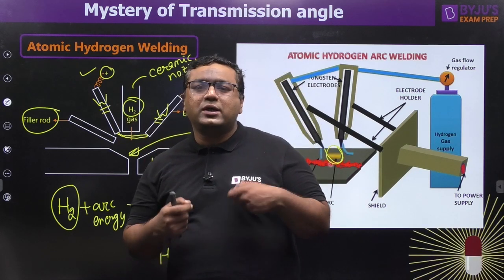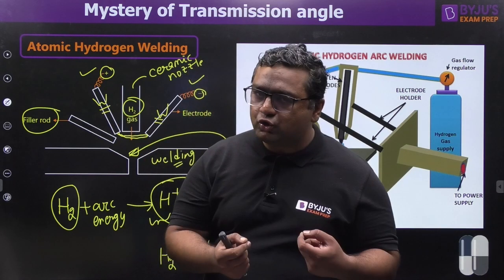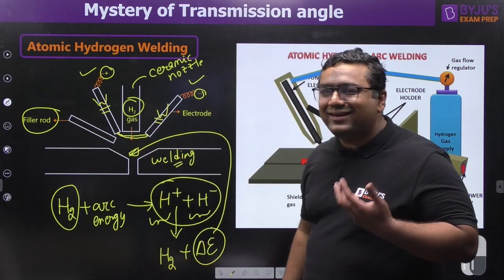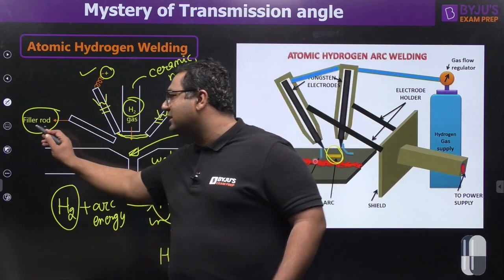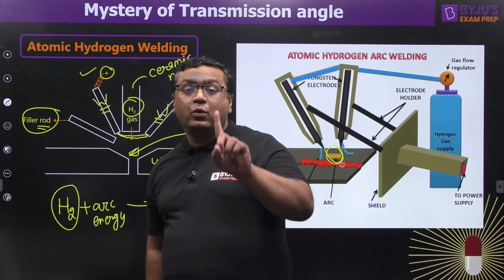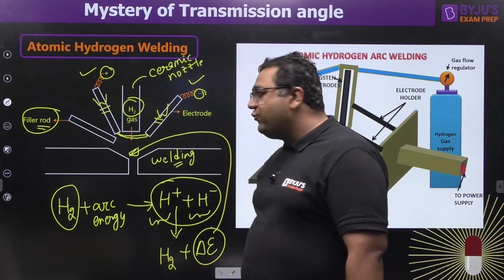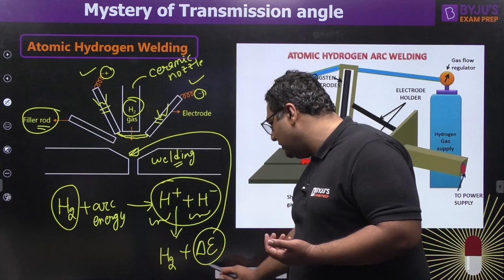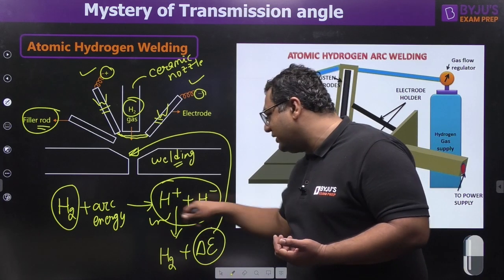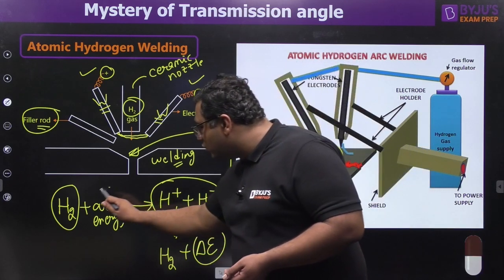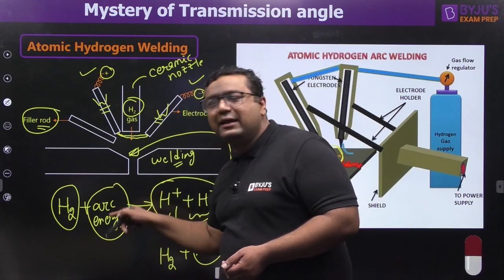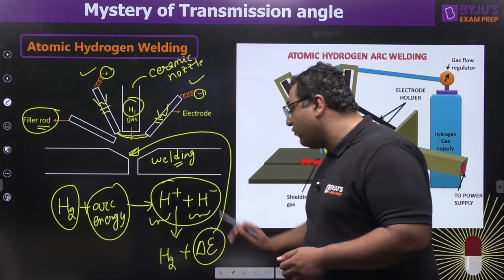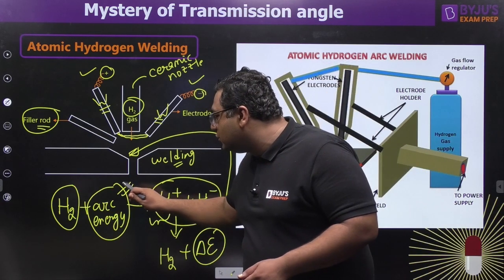One common misconception: why is a filler rod used? Tungsten is brittle in nature, so we cannot allow the tungsten electrodes to be consumable. Therefore the two electrodes are non-consumable, and to provide extra material for welding we use a filler rod. Another confusion is why the energy isn't used directly from the arc — why go through this hydrogen dissociation step.